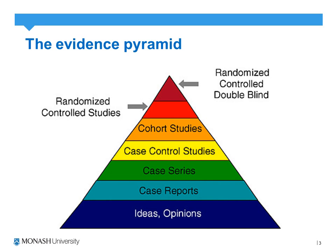The reason that we have randomized controlled trials at the top is that they are the only study in which we can control for the four main biases in controlled trials — those being selection, performance, attrition, and detection bias.